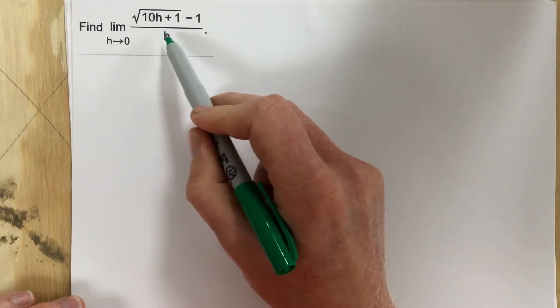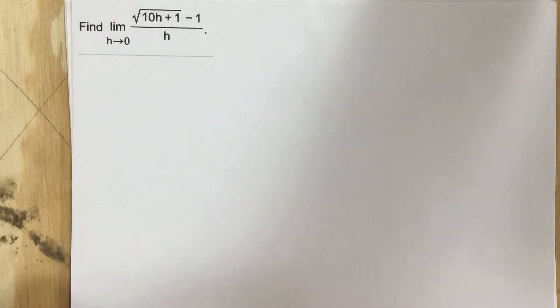So essentially, I need to get rid of this h value in the denominator, because if I get rid of the h in the denominator, then I can actually plug 0 in and find out what my limit is. So how can I do that?